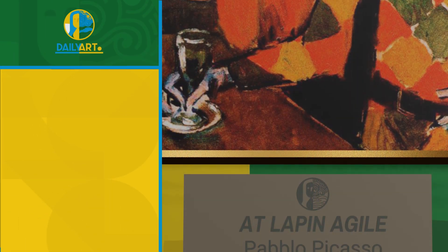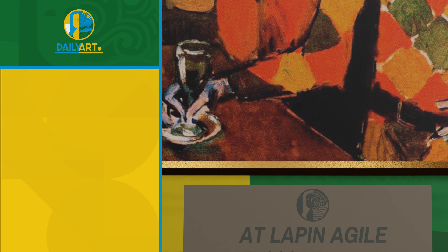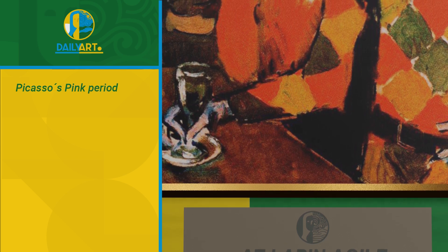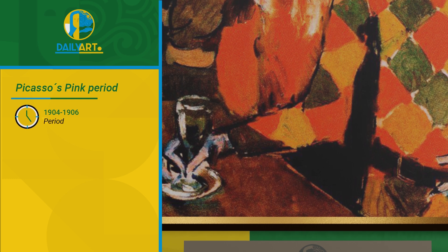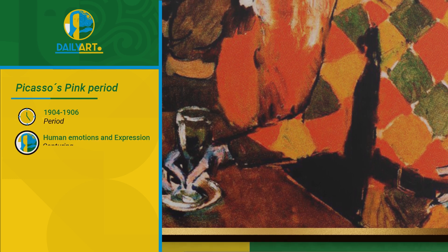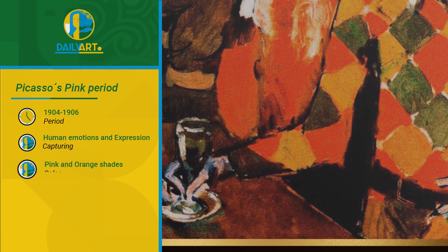The painting was painted during Picasso's period known as the Rose period, which is characterised by a predominance of pinks and oranges and overall warm colour tones, along with circus and clown themes.